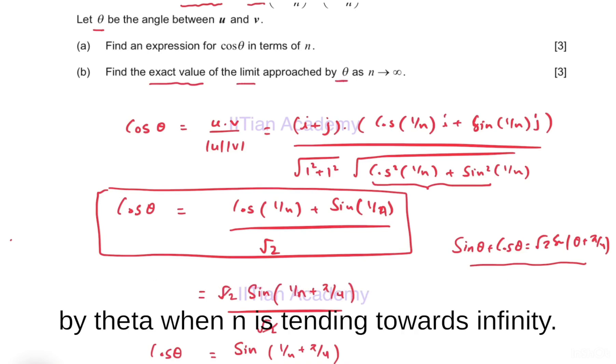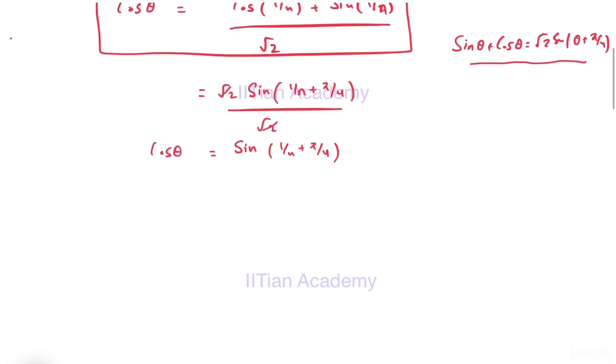The limit is approached by θ when n is tending towards infinity. So as n tends towards infinity, 1/n tends towards 0.